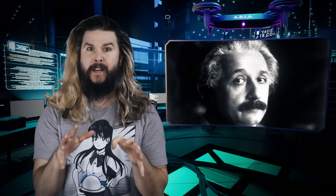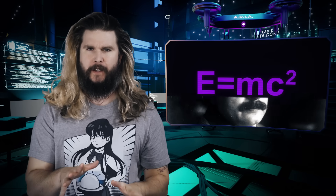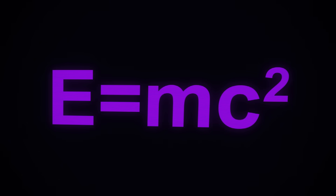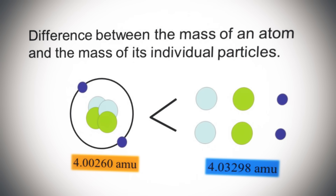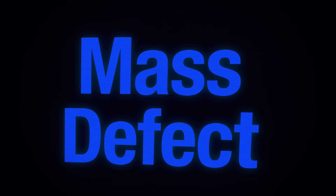Almost 120 years ago, back in 1905, genius and mustache enthusiast Albert Einstein discovered one of the most mind-bending things in fundamental physics. He explained via his most famous equation that if you were to take a nucleus of an atom and weigh it, and then take all the pieces of that nucleus and weigh them separately, the two masses would not be the same — there would be a so-called mass defect.